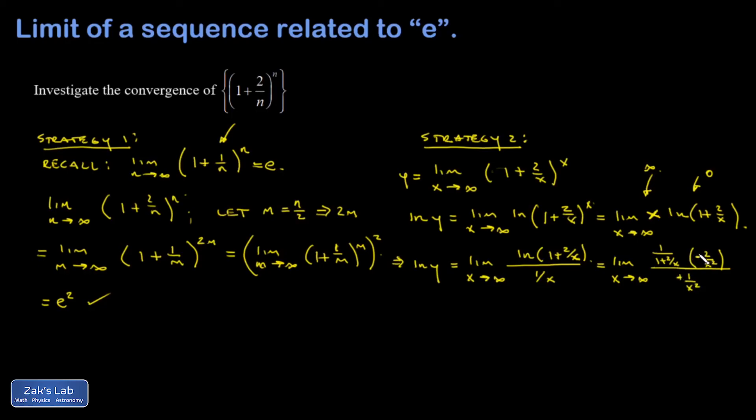The minus signs cancel. Multiply the top and bottom by x squared, and those cancel. And I end up with natural log y is the limit as x goes to infinity of 2 over 1 plus 2 over x.